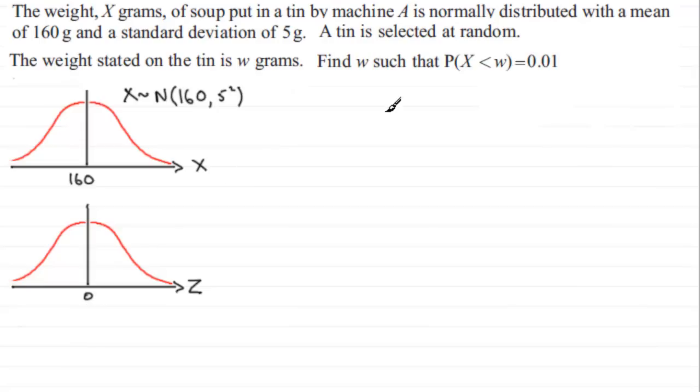Now, we want to place this value of W somewhere on our scale here. Clearly it's got to be to the left of the 160 because the probability of being less than it is 0.01. I know that the probability of being less than 160, this area here, is 0.5. So clearly W's got to be on the left of the 160. Let's mark that in as that value there.